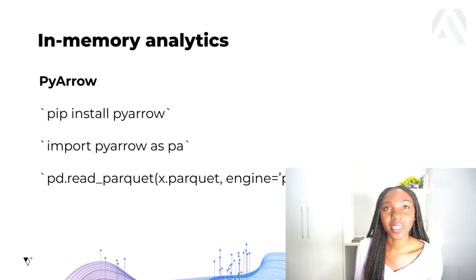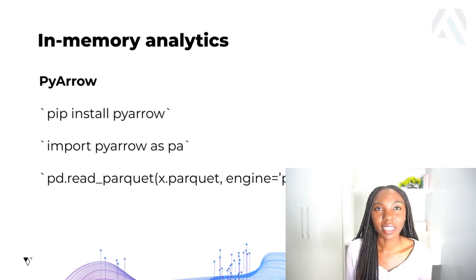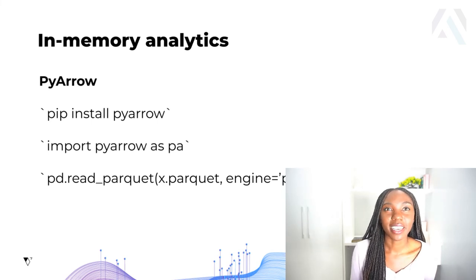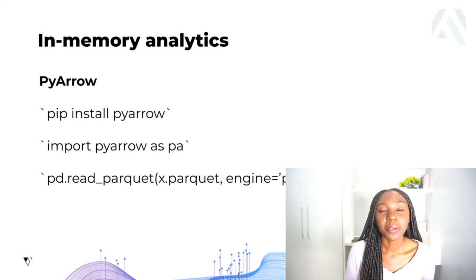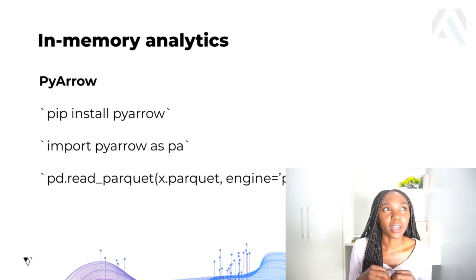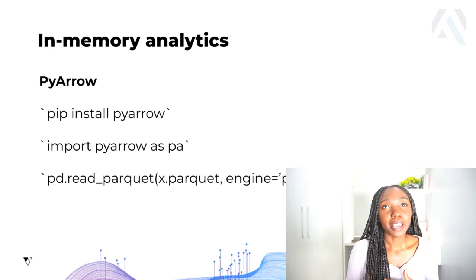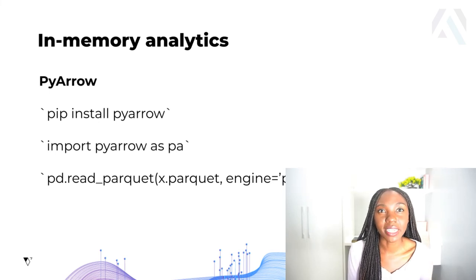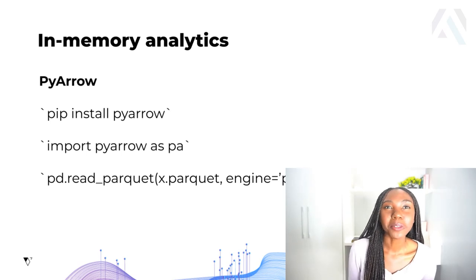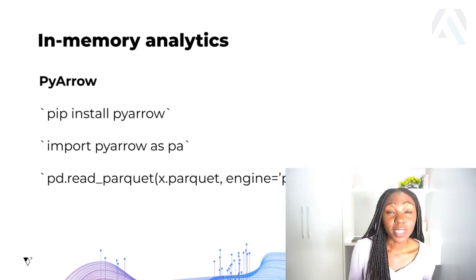Something very cool about PyArrow is that if you're already using pandas and would like to try out PyArrow and see the difference it makes in your workflow, you can choose the PyArrow engine whenever you're using something like read_parquet or read_csv. Those methods in pandas include the option to choose the PyArrow engine, which should make quite a big difference in cutting down the amount of time you spend when reading parquet files or CSV files.